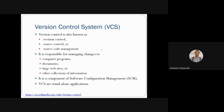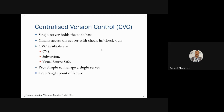A version control system is basically also known as revision control, source control, or source code management. It manages computer programs, documents, large websites, and other kinds of data and information. Version control systems are also a component of software configuration management, controlling versioning for different software. They are independent and standalone applications with no external dependency.